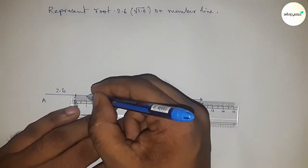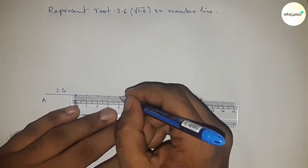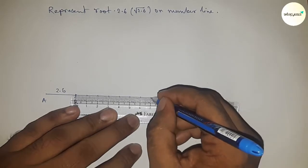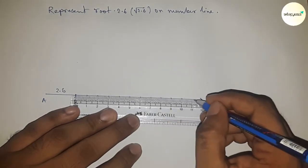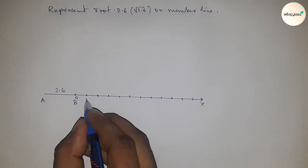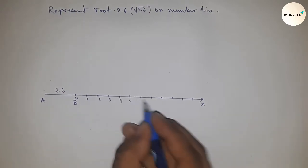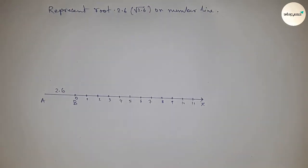Next we have to mark all the numbers from B to X by using a scale. So here marking the numbers on the line by this way. This is 0, 1, 2, 3, 4, 5, and so on. And taking this as point C.